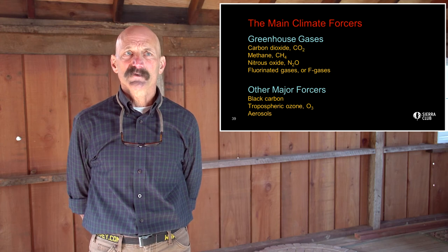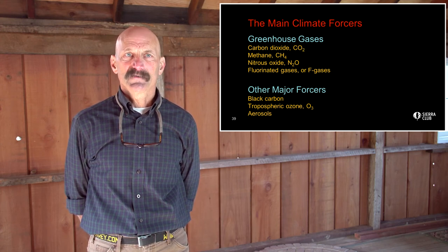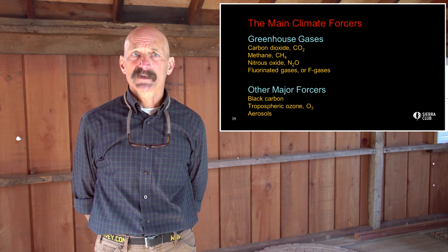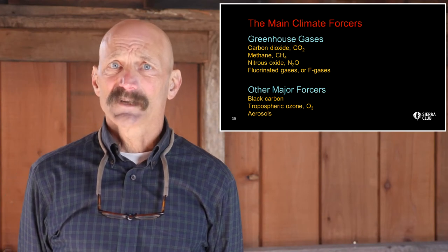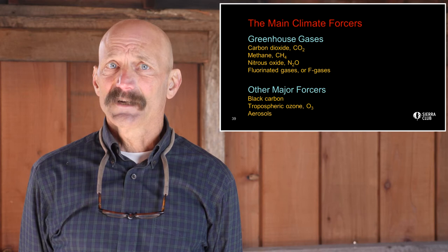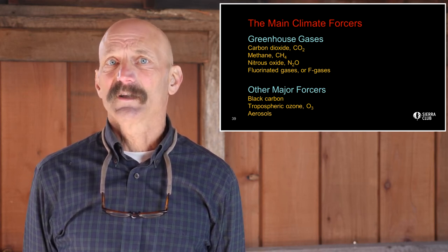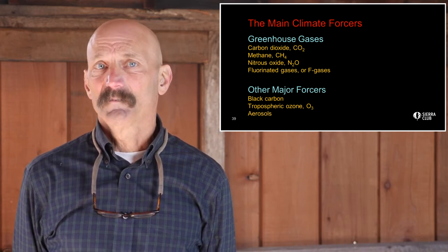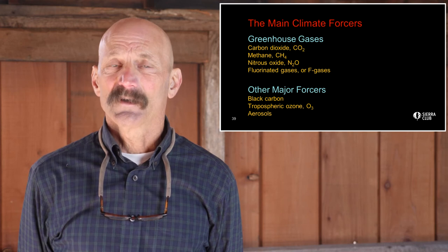Here are the main climate forcers — both positive and negative. The list of greenhouse gases includes carbon dioxide, methane, nitrous oxide, and the fluorinated gases, or F-gases. The other major forcers include black carbon, tropospheric ozone, and aerosols.